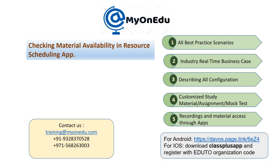In SAP S4 HANA, in resource scheduling, we are having four different major apps which have different functionality to manage your schedulings.